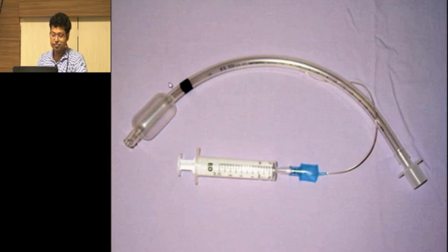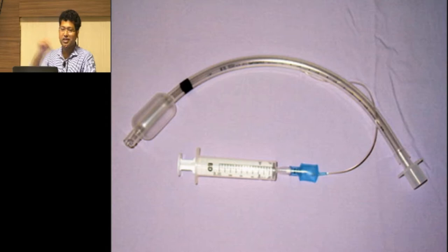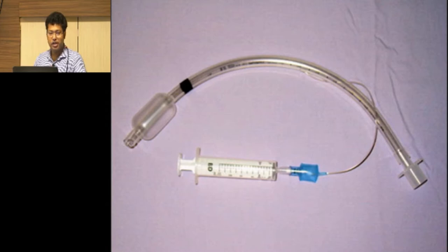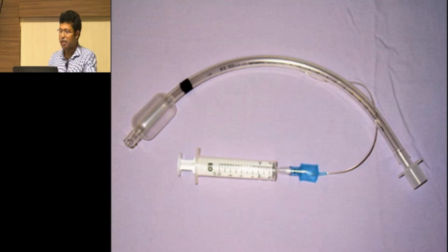The endotracheal tube has a cuff which is inflated to seal the airway. Use an appropriate tube size — too small a tube will leak around the cuff even when fully inflated. Cuff pressure should be measured with a pressure gauge and maintained at 20-25 cmH2O, with a maximum of 30 cmH2O.